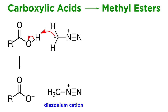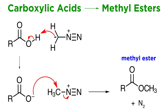That gives us a diazonium cation, which is extremely unstable, such that even a carboxylate anion is capable of performing SN2, attacking the carbon atom and kicking off molecular nitrogen. The carboxylate has been methylated, leaving us with the methyl ester.